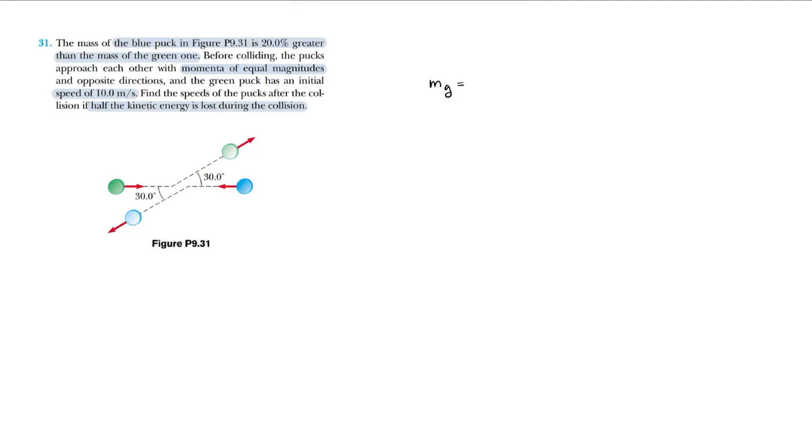So let's call mass of the green puck as mg, which equals m. And we know that mass of the blue puck is 120% of that, so we're going to call it 120% of m, which is just 1.2m.